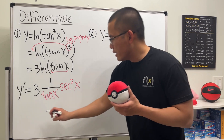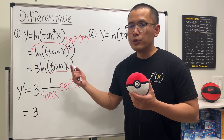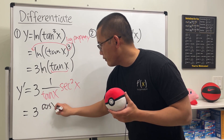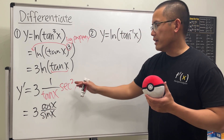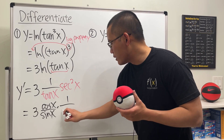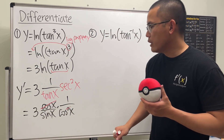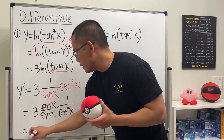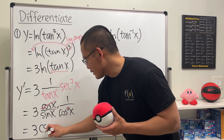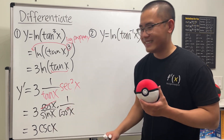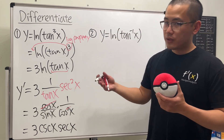We can simplify further. We have 3 times 1 over tangent, which is the same as cotangent, which equals cos(x) over sin(x). Then secant squared is 1 over cos²(x). The cosine terms cancel, and we end up with 3 times 1 over sin(x) — that's 3·csc(x) — times 1 over cos(x), which is sec(x). So the answer is 3·csc(x)·sec(x).